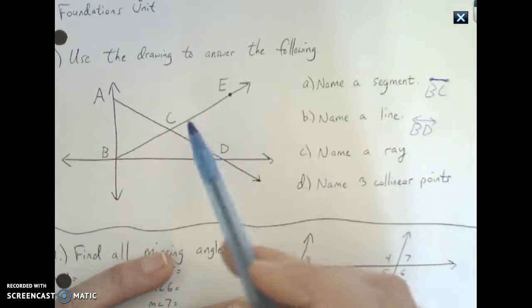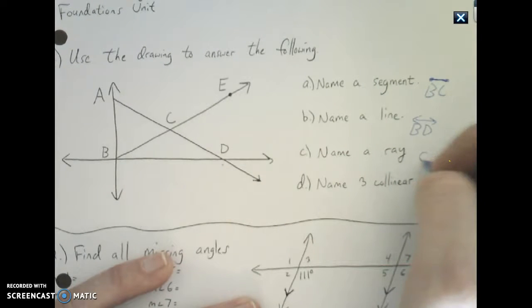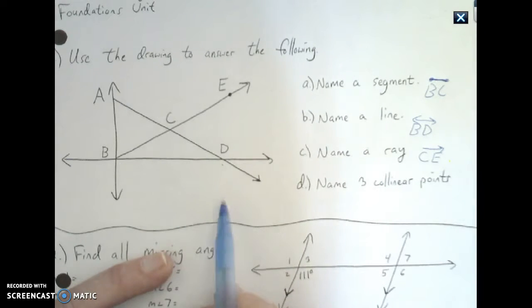Naming a ray, start, go through it. So in this case, C, E. That's one way you could do it. You could do C, D, you could do B, D. As long as you have the appropriate symbol.